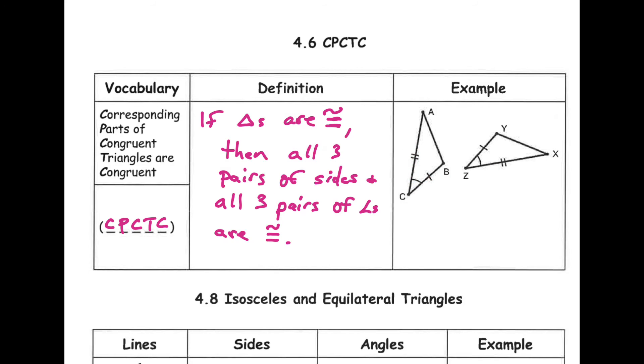But by CPCTC, corresponding parts of congruent triangles are also congruent. We also know angle A is congruent to angle X. We know angle B is congruent to angle Y. And we know side AB is congruent to side XY.